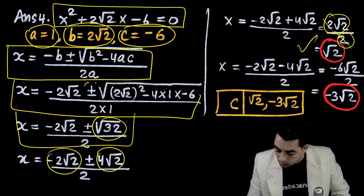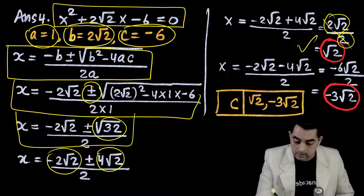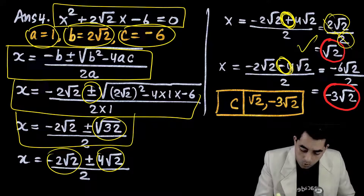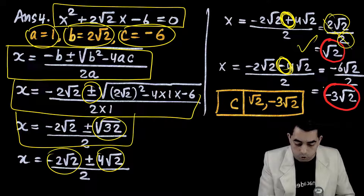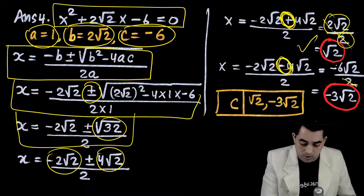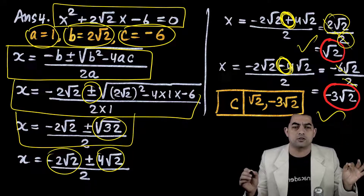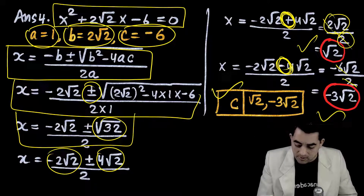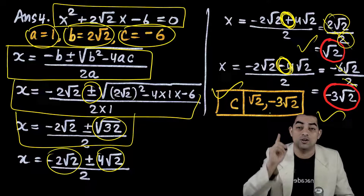For the minus case: (-2√2 - 4√2)/2 = -6√2/2 = -3√2. So the two roots are √2 and -3√2. The correct answer is option C: √2 and -3√2.